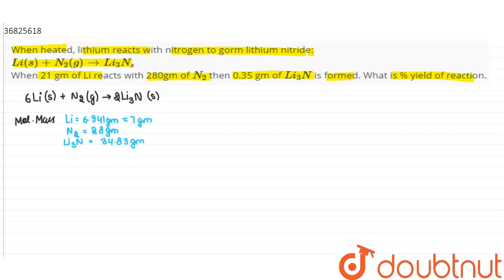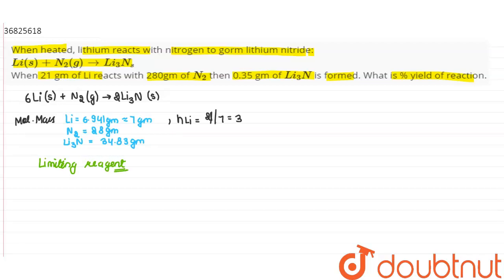Now we will find out the limiting reagent. Moles of lithium = given weight divided by molecular weight = 21 divided by 7 = 3 moles. Similarly, moles of nitrogen = 20 divided by 28 = 0.71 moles, approximately.